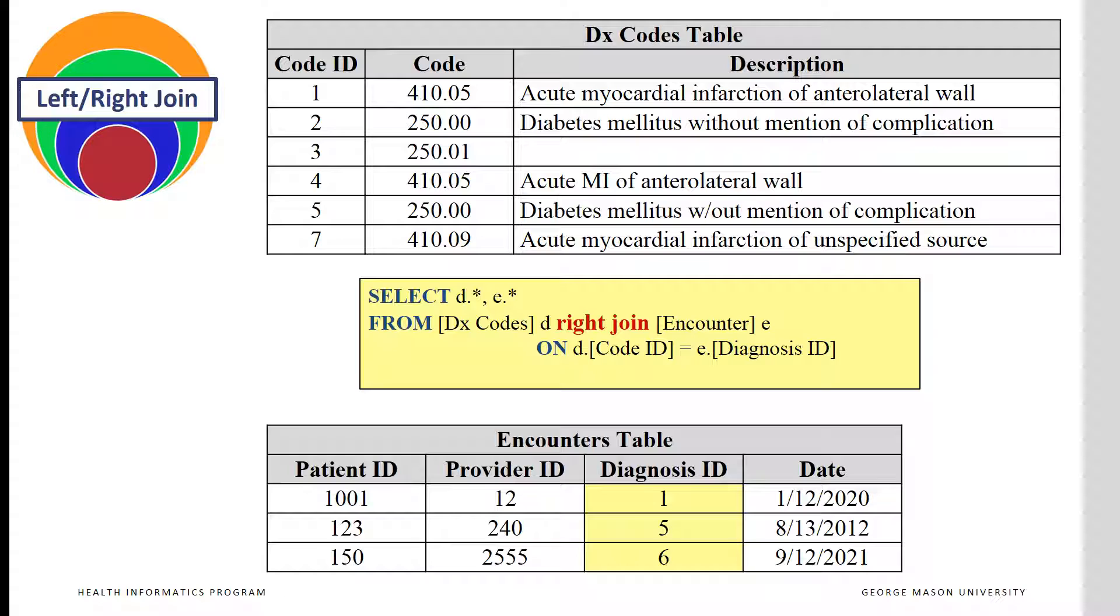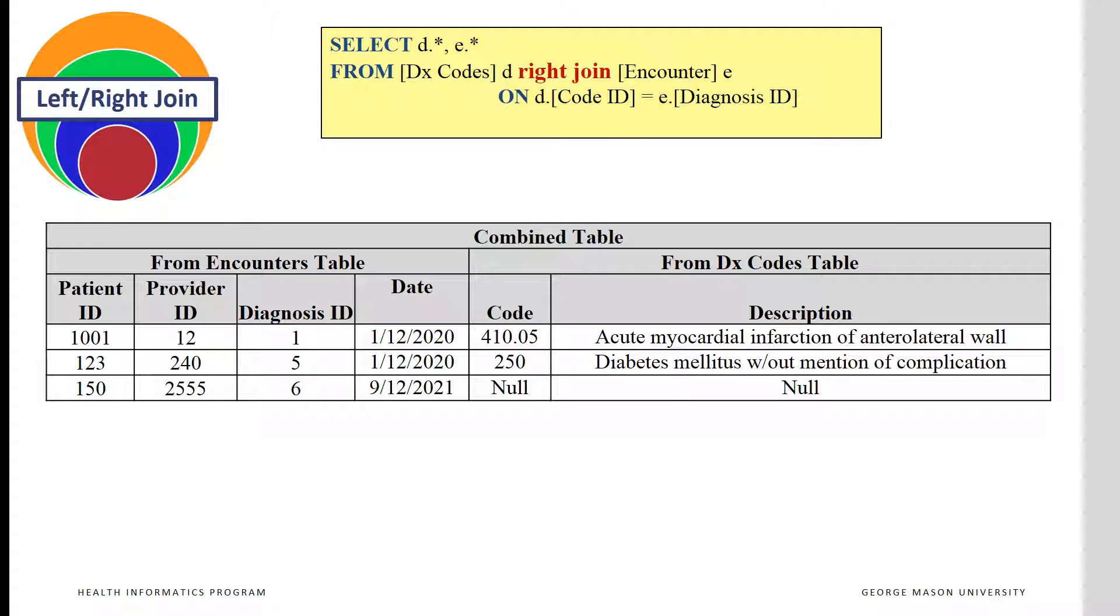All claims data are still there, but the description of the diagnosis is null when the description is not available. Right join will lead to listing of all records in the encounter table. Note that the diagnosis ID 6 is listed even though with description left null.